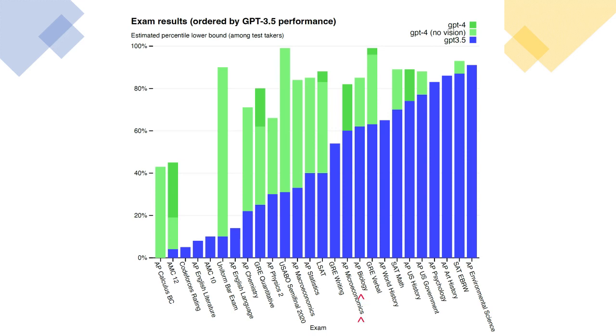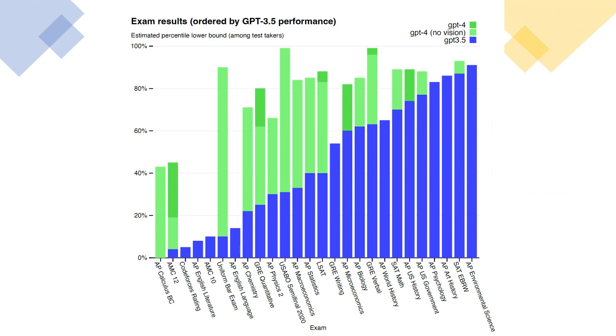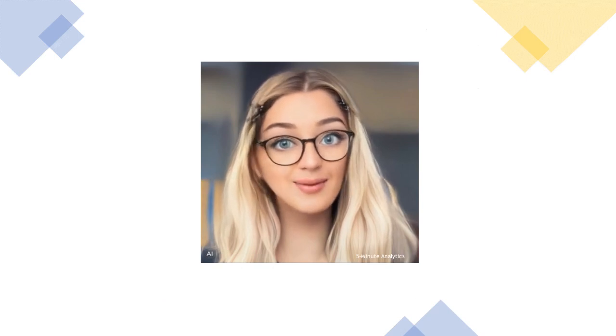For example, although GPT-4 attains the highest possible score on AP Biology — 5 out of 5 — this is only shown in the plot as the 85th percentile, because 15 percent of test takers achieve that score. Amazingly, GPT-4 demonstrates human-level performance on the majority of these professional and academic exams.